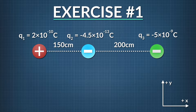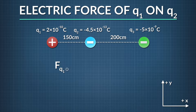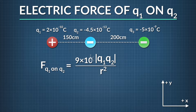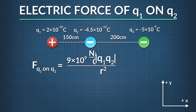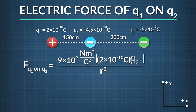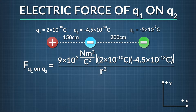Using Coulomb's Law, the electric force magnitude of q1 and q2 equals k times the absolute value of q1 times q2, divided by the distance between q1 and q2, r squared. Plugging in 9 times 10 to the ninth newton meters squared per coulomb squared for k, 2 times 10 to the negative tenth coulombs for q1, negative 4.5 times 10 to the negative thirteenth coulombs for q2, and 1.50 meters for r.